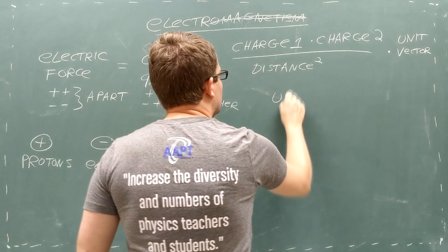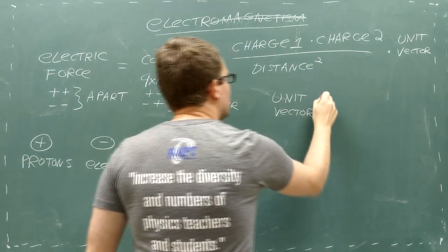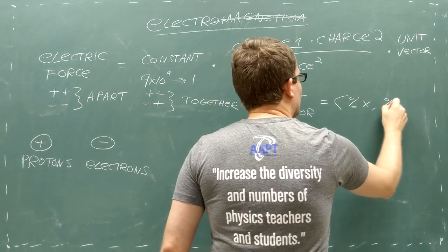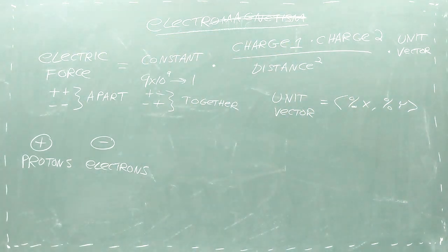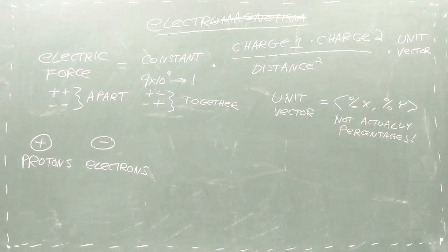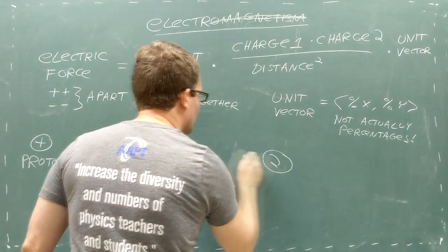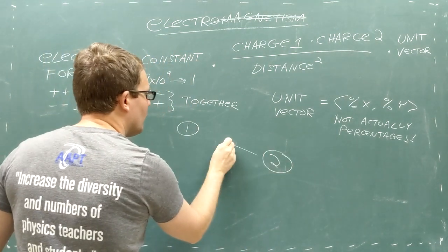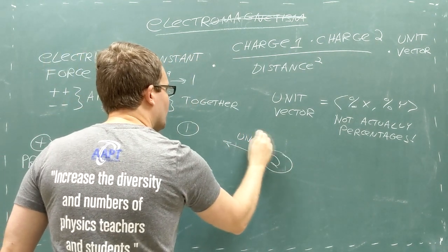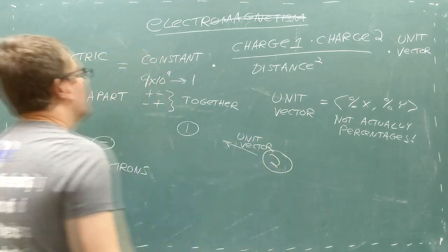We can get the direction of the electric force using something called a unit vector. Your textbook might write a unit vector as a variable with a hat over it. You can think of a unit vector as telling you what percentage of a vector points in the horizontal direction and what percentage points in the vertical direction. In this case, we need the direction of the distance vector from object 2 to object 1, so we'll ask VPython to turn this distance into a vector.